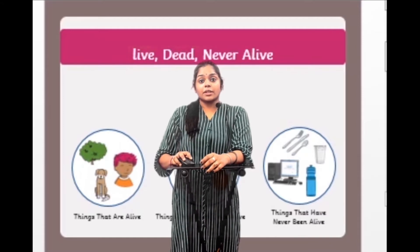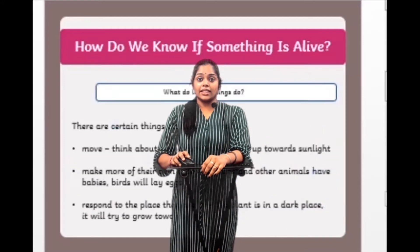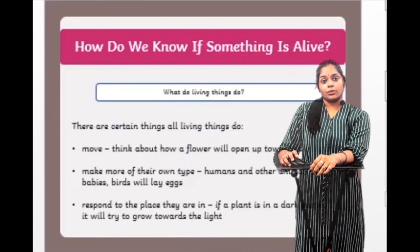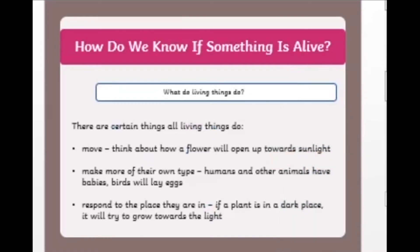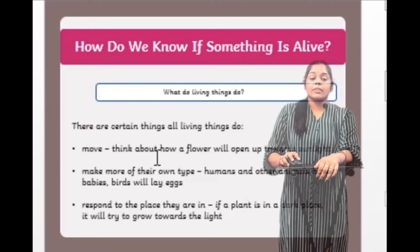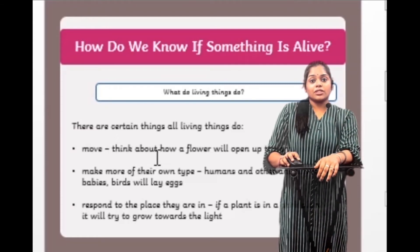How do we know if something is alive? All living things do certain things. The first is movement — think about how a flower opens up towards the sunlight. The second is reproducing, making more of their own type: humans and other animals have babies, birds lay eggs. The third is responding to their environment.